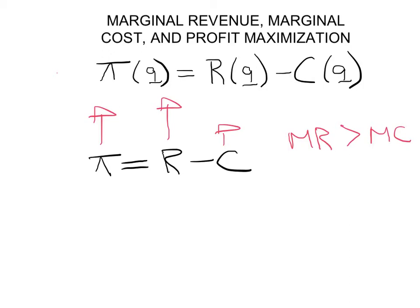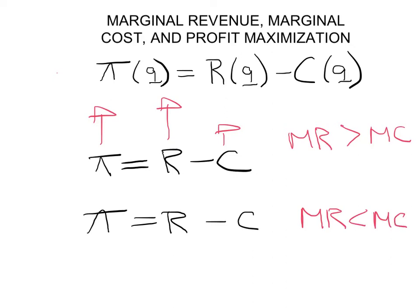Now imagine what will happen on the other hand if the marginal revenue of the last unit you produce was less than the marginal cost. In that case, your revenue increased by that much with your last unit and your cost increased by more, so your profits went down. If the revenue created by the last unit was less than the cost created by the last unit, you actually decrease your profit by producing that unit.